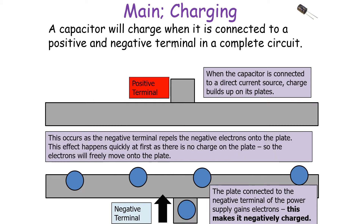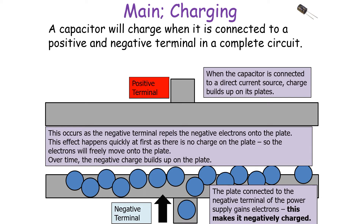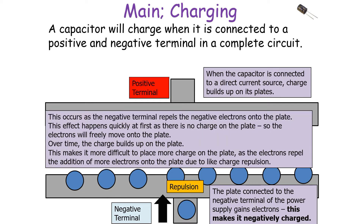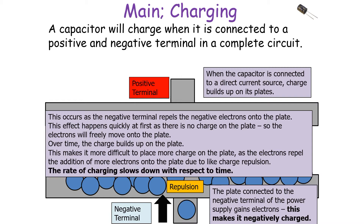This effect occurs quickly at first as there's no charge on the plate, so the electrons will freely move onto the plate. However, over time the negative charge builds up on the plate, making it more difficult to place more charge on the plate, as the electrons repel the addition of more electrons due to like-charge repulsion.